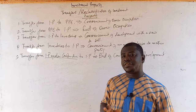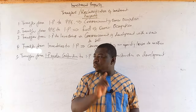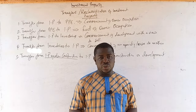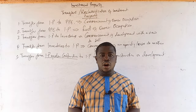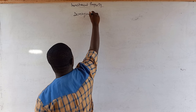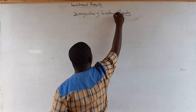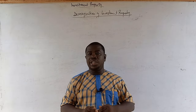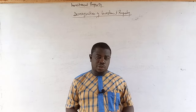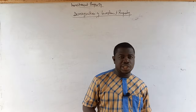Having understood the transfers, one key important area is the de-recognition of investment property, which also covers disposal. De-recognition is the opposite of recognition — recognition means incorporating assets into the financial statement, so de-recognition means taking it off the financial statement. There are two conditions for de-recognition of investment property.